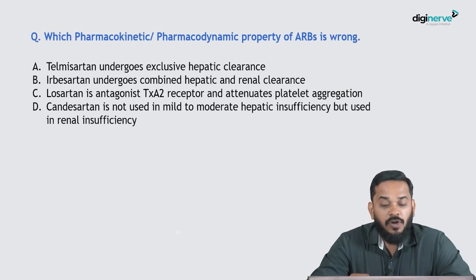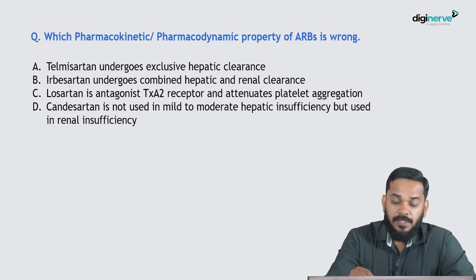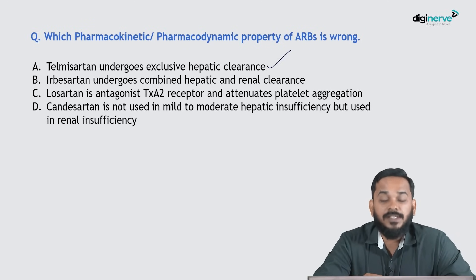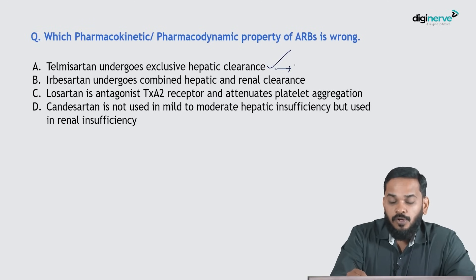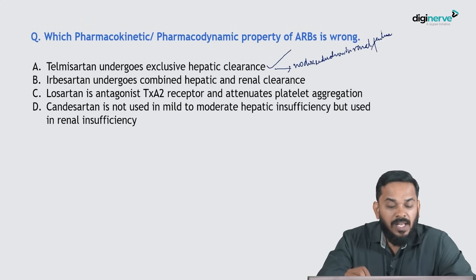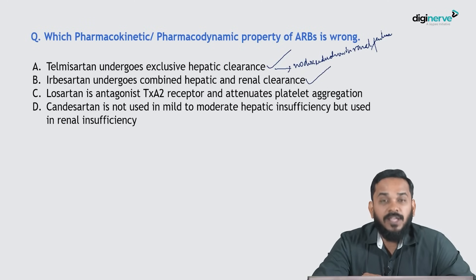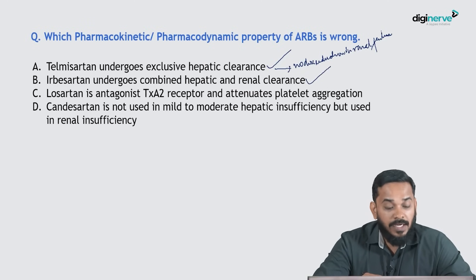Next question: which pharmacokinetic or pharmacodynamic property of angiotensin receptor blockers is wrong? Telmisartan undergoes exclusive hepatic clearance — that is correct. Telmisartan undergoes extensive metabolism so no dose reduction is required in renal failure. Irbesartan undergoes combined hepatic and renal clearance — also correct, as some is metabolized and some is excreted unchanged in urine.